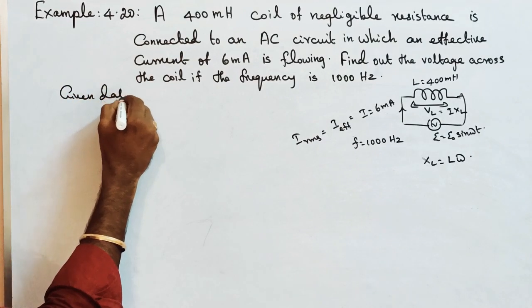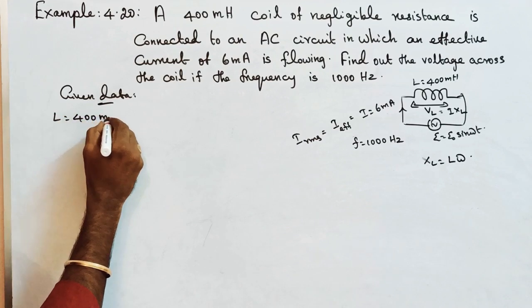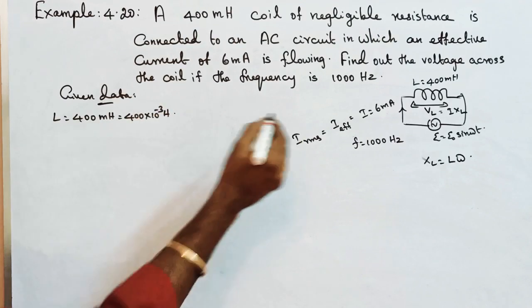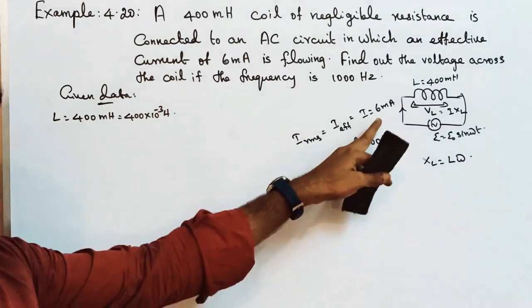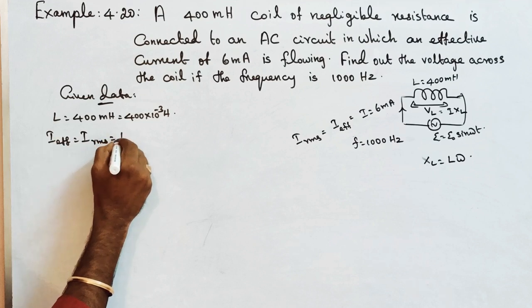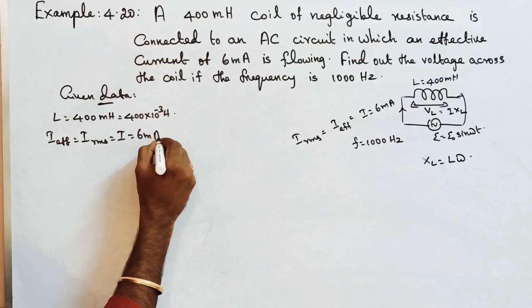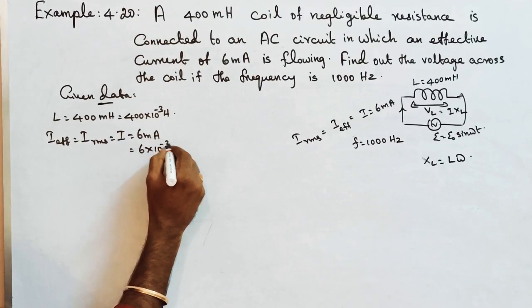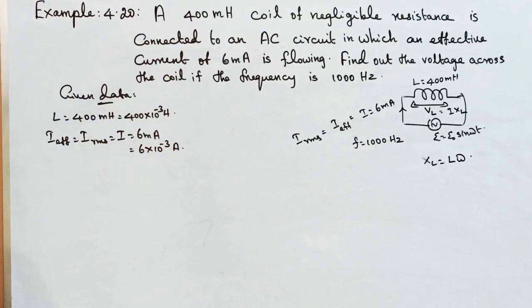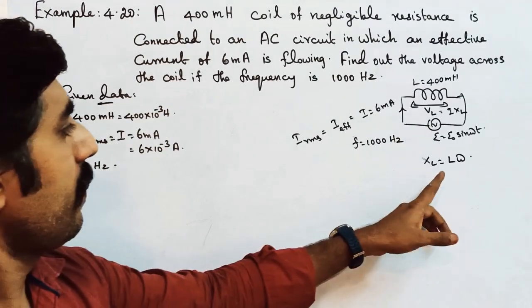Given data: L is equal to 400 millihenry which is equal to 400 into 10 to the power minus 3 henry. I effective or I RMS, simply I, is equal to 6 milliampere which is equal to 6 into 10 to the power minus 3 ampere. Frequency is given, f is equal to 1000 hertz.